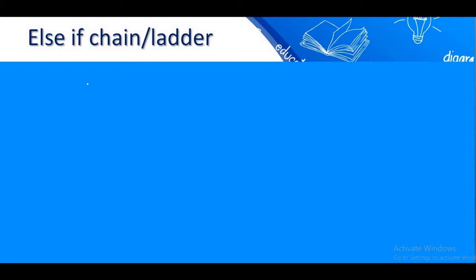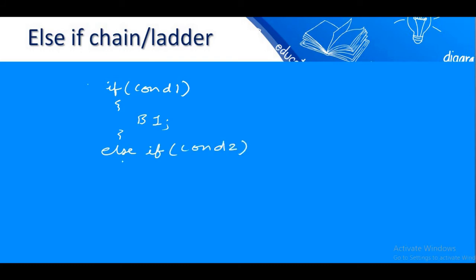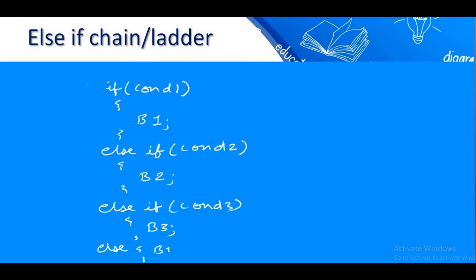Now let's jump to the else-if ladder, also called the else-if chain. It is used for multi-way decision making — to check multiple conditions. The syntax is: if with condition 1 and its block, then else-if with condition 2 and its block, then else-if with condition 3 and its block, and finally an else block which is the default — if all conditions are false, the default block executes.